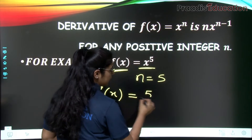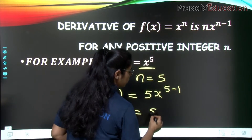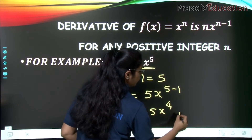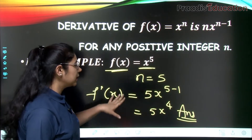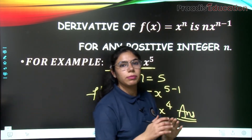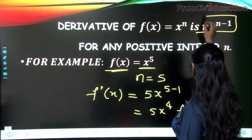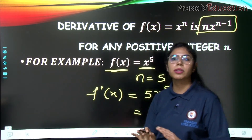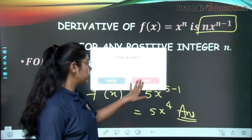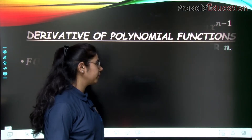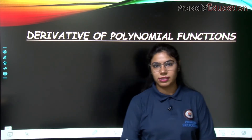For example, if f(x) = x^5, then f'(x) = 5x^(5-1) = 5x^4. That is your answer. See how simple it was — if you did this from first principles, it would take at least one page. But with this formula you get the answer in two steps. This is a very important formula, so remember it well.